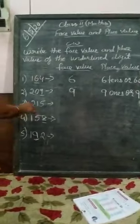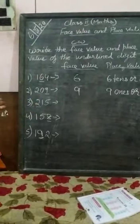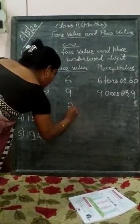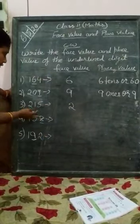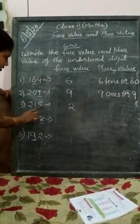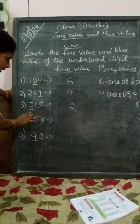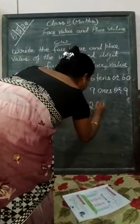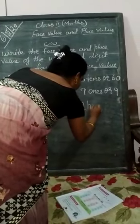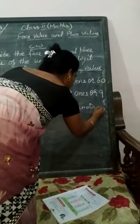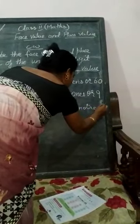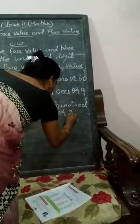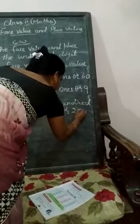Next, we will look at 250. The Place Value of 2 will be in the 100's place — 1's, 10's, 100. So what will it be? 200. Let's write this as 200. The place value of 2 in 250 is 200.